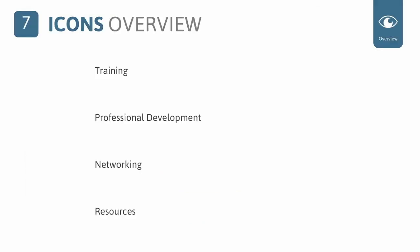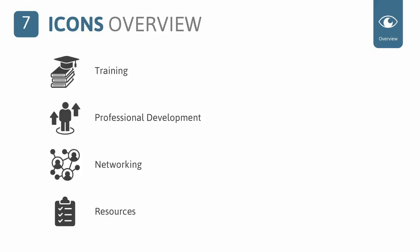Strategy number seven is icons. Icons are a great way to bring qualitative data to life. Here is a standard bulleted list — but if we add icons, it allows your eye to absorb more information and provide a little more context. Icons are a great way to help your audience navigate your reports and to provide additional visual appeal.